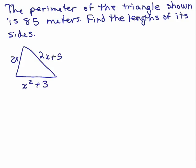Here's a perimeter problem of a triangle. The perimeter of the triangle shown is 85 meters. Find the lengths of its sides.